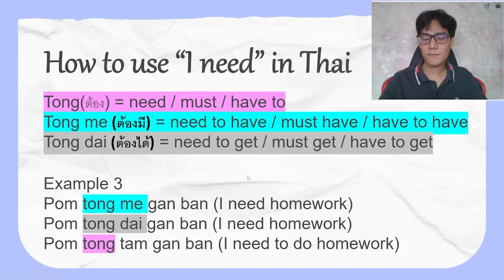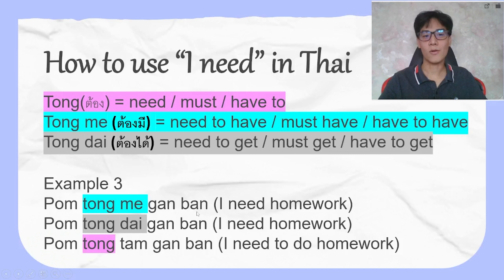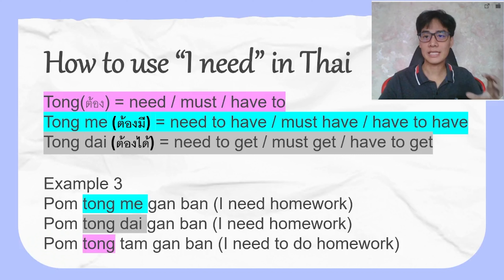So if I want to say 'I need homework,' I will say ผมต้องมีการบ้าน, which means 'I need to have homework.' In Thai, we don't have the word 'need' as a verb, that's why we say it like this: ต้องมีการบ้าน — I need homework.